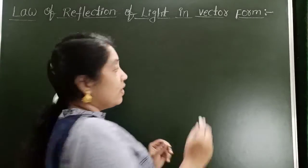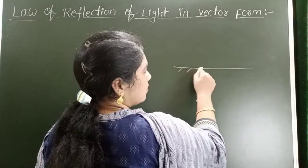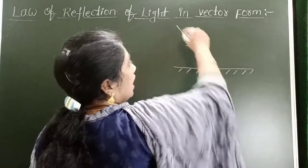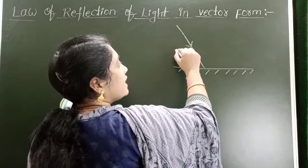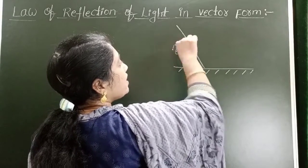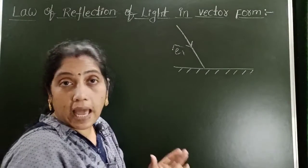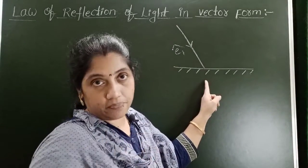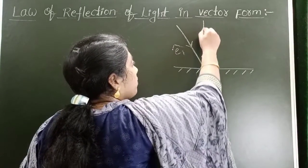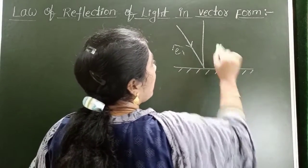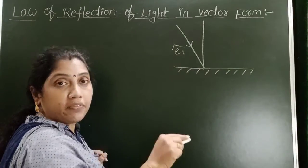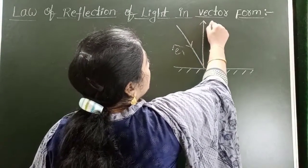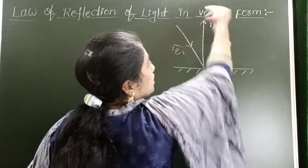Let us draw a reflecting surface. When a light ray is incident on this surface, along the direction of the incident light ray, take a unit vector E1 cap. E1 cap is the unit vector along the direction of the incident light ray. Now draw the normal — a perpendicular line to the plane surface — and take a unit vector along the direction of the normal also. N cap is the unit vector outward along the normal.